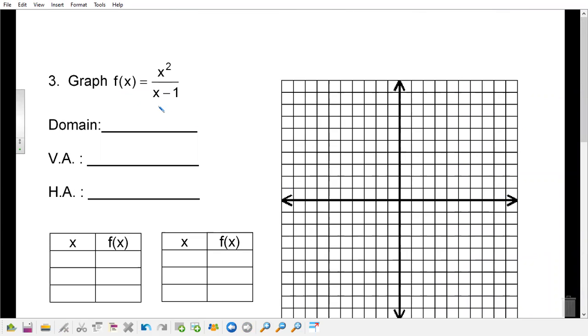So we have x squared over x minus one. So here, if we were to graph this, our domain and our vertical asymptote is at x equals one. And is there a horizontal asymptote?